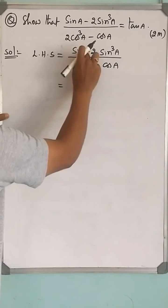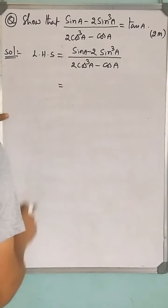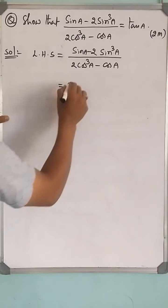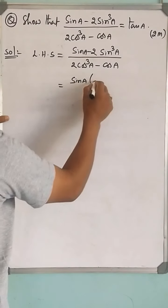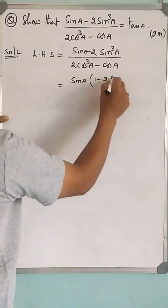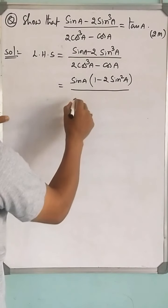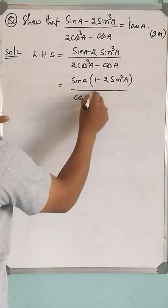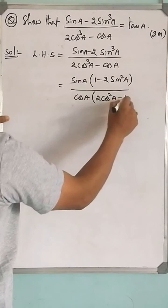See here, sin a is common in the numerator. Take sin a common. If sin a comes outside, then 1 remains here: sin a(1 - 2sin²a). Take cos a common in the denominator: cos a(2cos²a - 1).